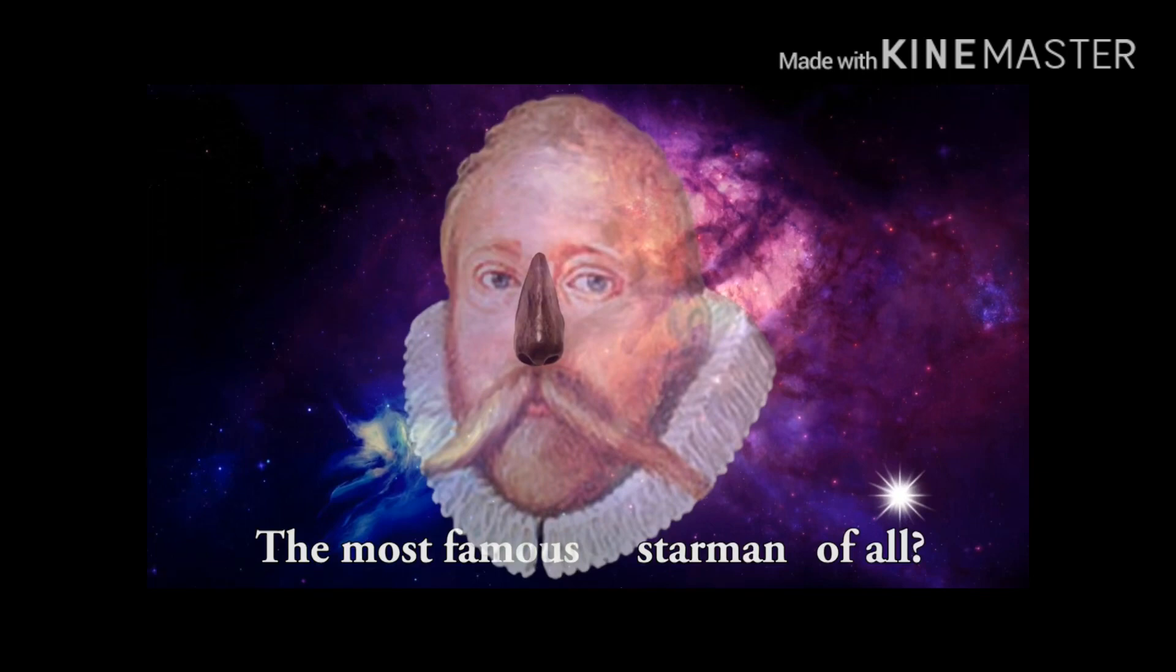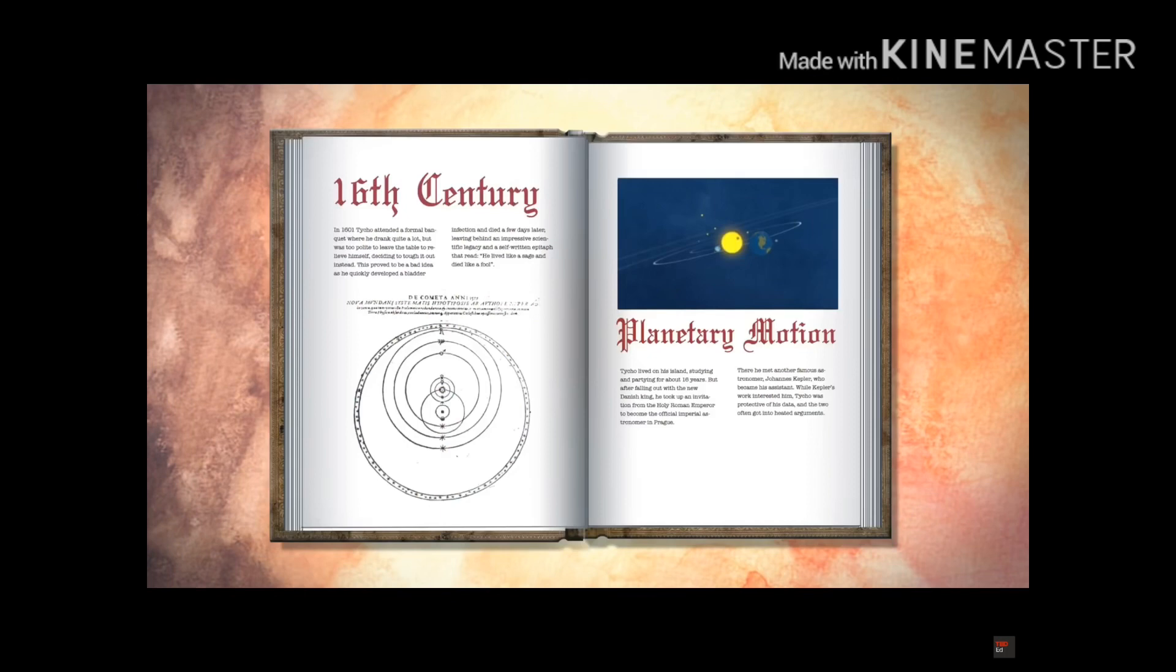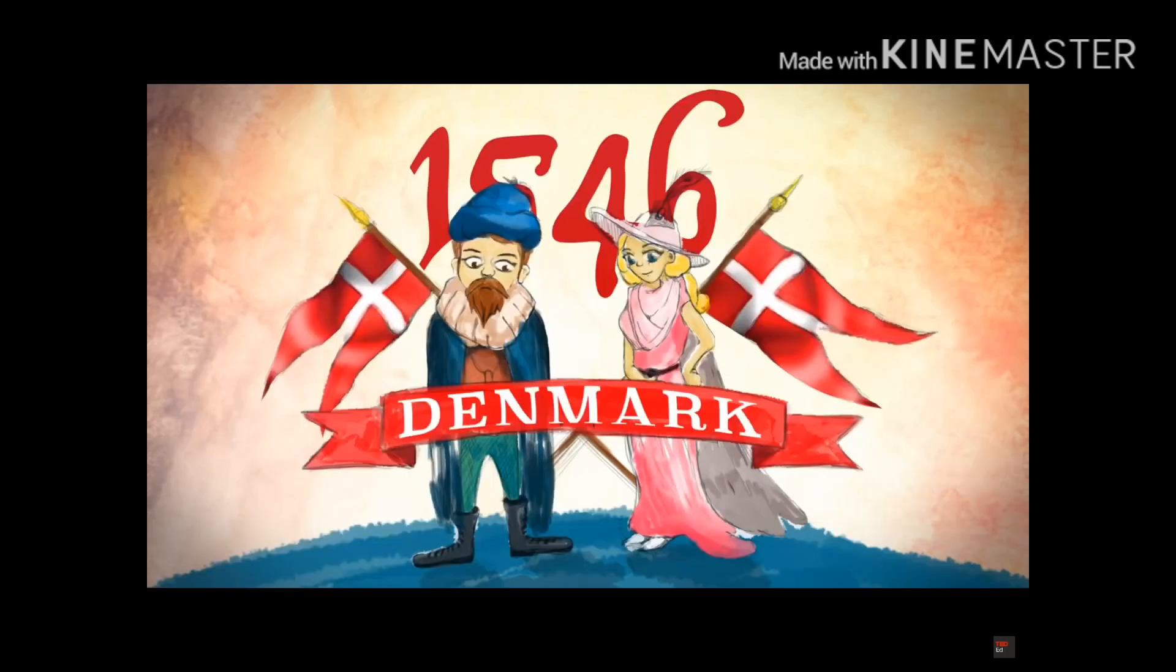Next comes the great observer Tycho Brahe who lived in the 16th century. Brahe was born in Denmark to very rich parents but was kidnapped and brought up by his uncle at the age of two, and his parents had no problem with that. Brahe was a brilliant mathematician.